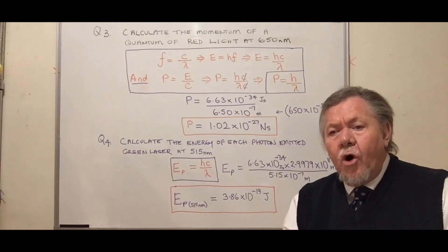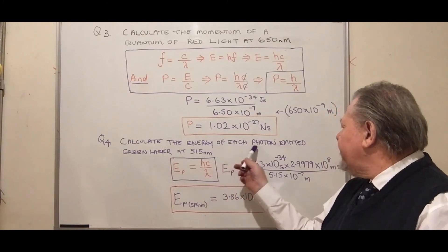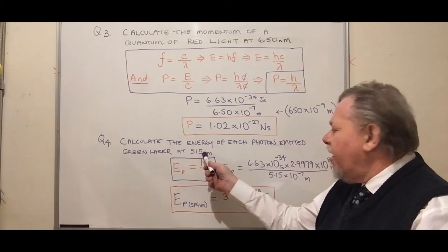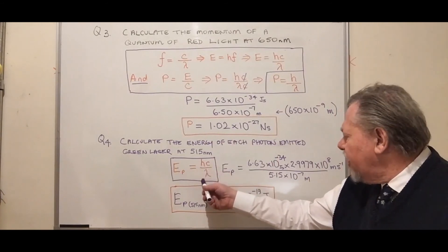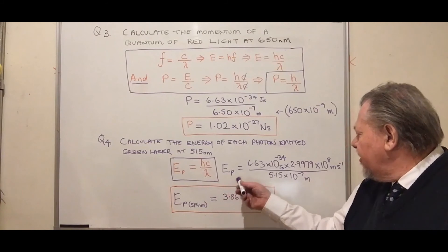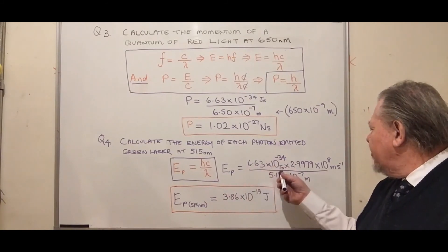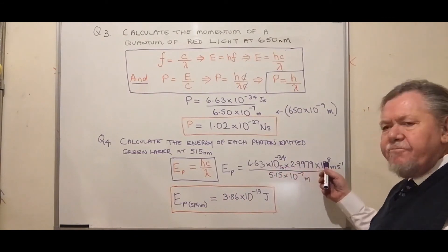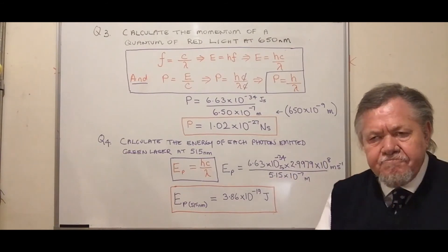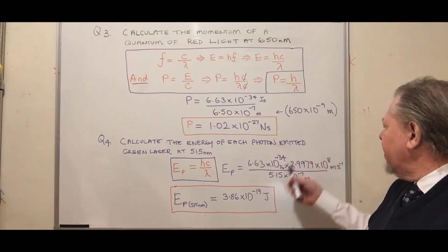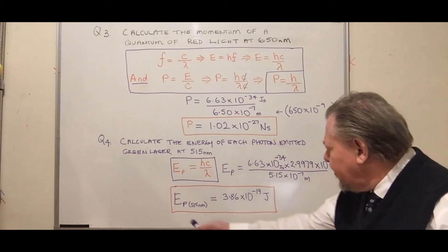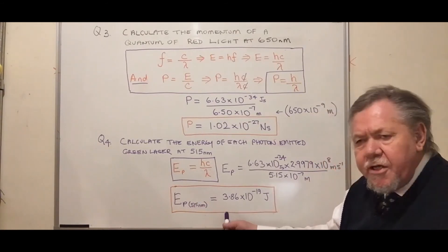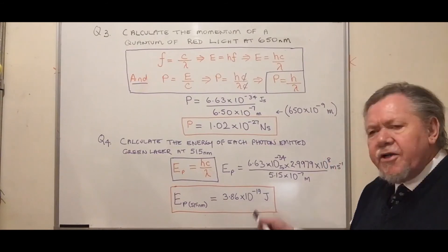Question four: calculate the energy of each photon emitted by a green laser at 515 nanometres. Energy equals hc/λ. So: 6.63 × 10⁻³⁴ J·s times 2.9979 × 10⁸ m/s divided by 5.15 × 10⁻⁷ m (converting 515 nm to scientific notation). This gives the energy of a photon at 515 nm as 3.86 × 10⁻¹⁹ joules.